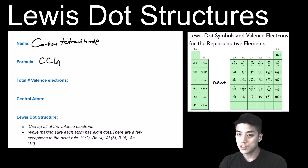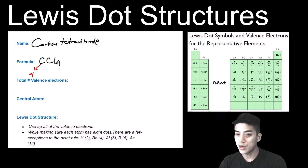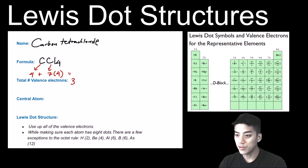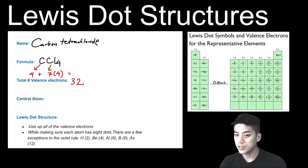Let's draw the Lewis dot structure for carbon tetrachloride, CCl₄. First, count the number of valence electrons each element contributes. Carbon has four, and chlorine has seven — with four chlorines, that's 28. When you add them all up you get 32 electrons, so this structure should have a total of 32 dots. The central atom will be carbon because it is the lone element in this formula.